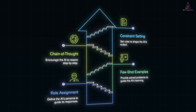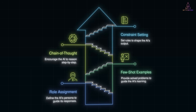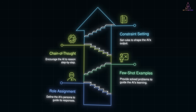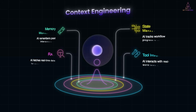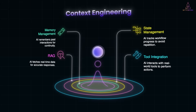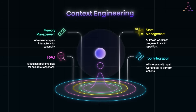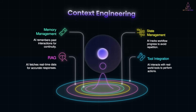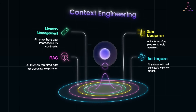Now a good prompt might get you through a demo. But in production, the model still doesn't know your company's data, your rules, or real-world edge cases — and that's why it starts to break down. Context engineering is about shaping not just the prompt, but the entire environment around the model. Think of it as giving the AI memory, state, access to your data, and even tools to act with.